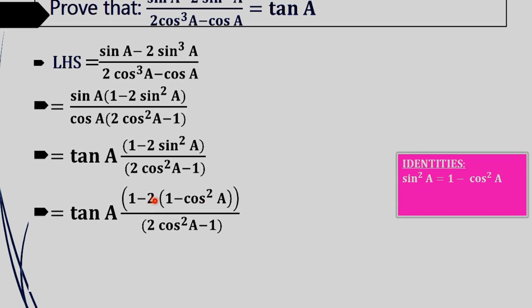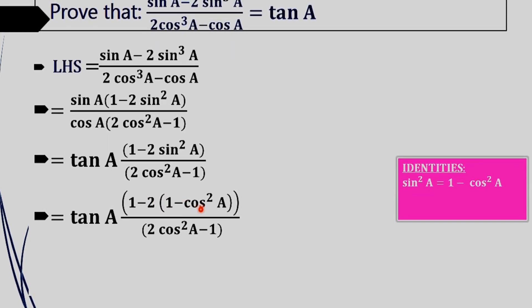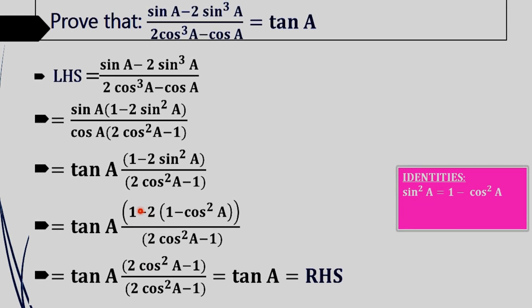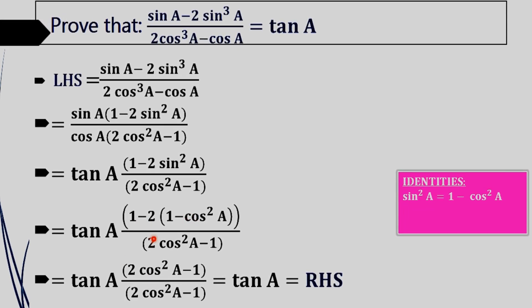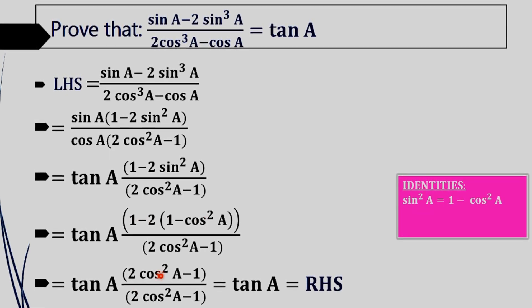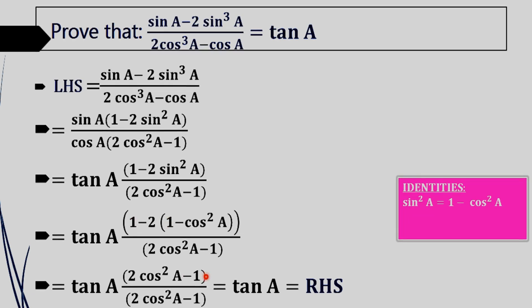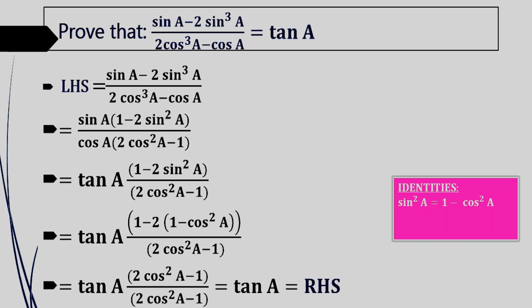On expanding this term, we get 1 minus 2 plus 2 cos square a. Since 1 minus 2 equals negative 1, we get 2 cos square a minus 1. On cancelling numerator and denominator — that is 2 cos square a minus 1 — we get our required RHS. So we take sin a and cos a outside to get tan a, and we read it as tan a till we get our result.